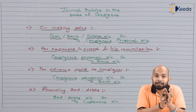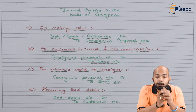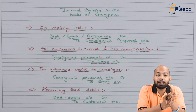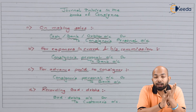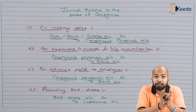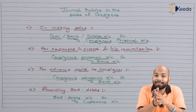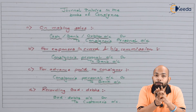The next entry to pass is for recording bad debts, because sales are happening so bad debts are bound to happen. Bad debts is an expense, so bad debts account will be debited and the customer's account will be credited. That is the entry for recording bad debts.